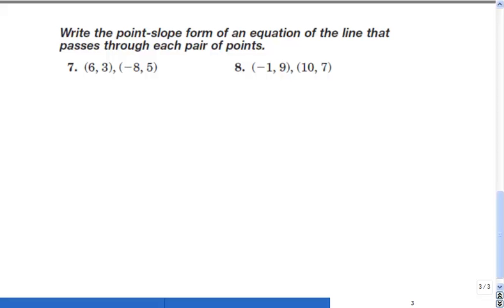Whatever problem we have related to the slope in the proficiency exam, we will be able to get the maximum score. Write the point-slope form of an equation of the line that passes through each pair of points. Before you start solving this problem, you have to remember point-slope form looks like what?